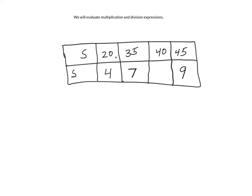So 20 times, no that's not it, 20 divided by. So 20 divided by, 35 divided by, 45 divided by gets 9. So 20 divided by what equals 4? Are you thinking 5? If you are, you're absolutely correct.